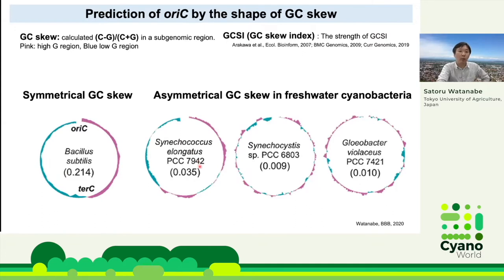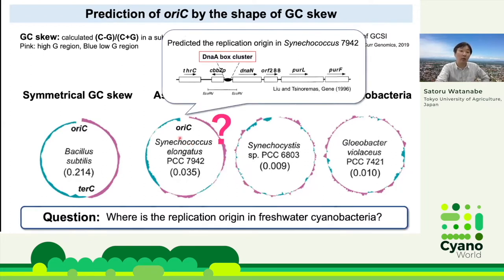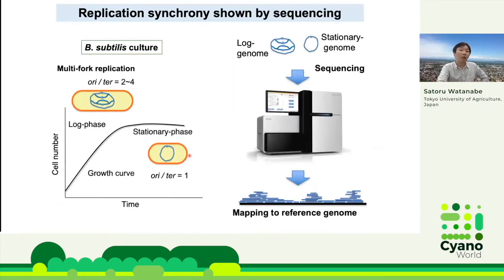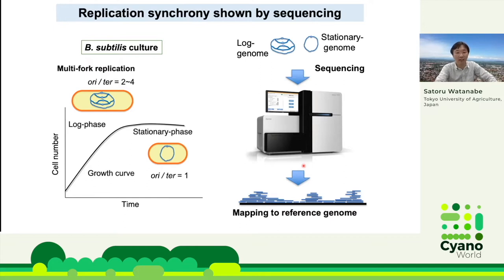DnaA oligomerizes, opens double-stranded DNA, and DNA helicase and DNA polymerases are recruited to initiate DNA replication. The location of oriC can be easily predicted by the shape of GC skew in monoploid bacteria. However, GC skew in polyploidy cyanobacteria is asymmetrical, and since there are many shift points between high and low G regions, the location of oriC cannot be predicted from GC skew alone. In Synechococcus 7942, the DnaA-box cluster has been identified upstream of the dnaA gene, located on the border between the high and low G regions. We prepared genomic libraries from cells in log- and stationary-phase cultures, sequenced the libraries by NGS, and mapped them onto the genome as a reference.